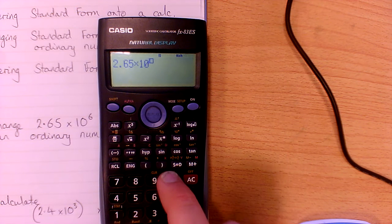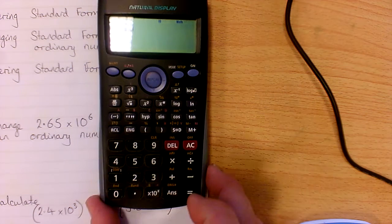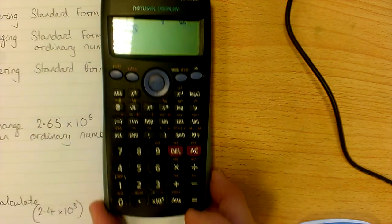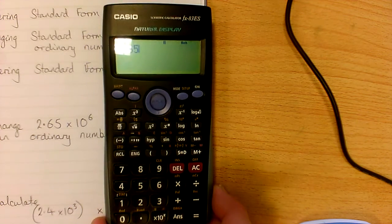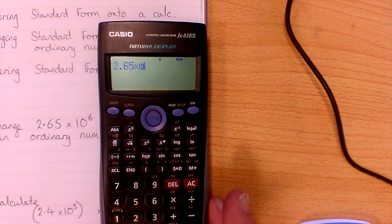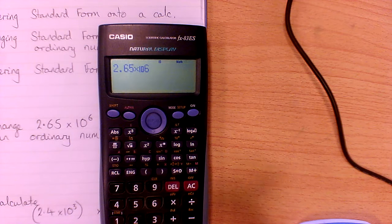If I just delete that, another way we can do it — after we've written our number 2.65 — we use our X10X button down at the bottom. If we press that, it comes up like this, and then we don't have to press the power button, we can just press 6. So that's how we enter it onto the screen.